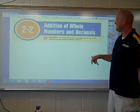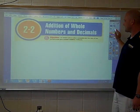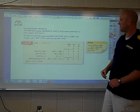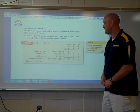In Lesson 2-2, we'll look at addition of whole numbers and decimals. We'll look at a couple of different methods in which you can do this. The first one that we'll look at is called the partial sum method.